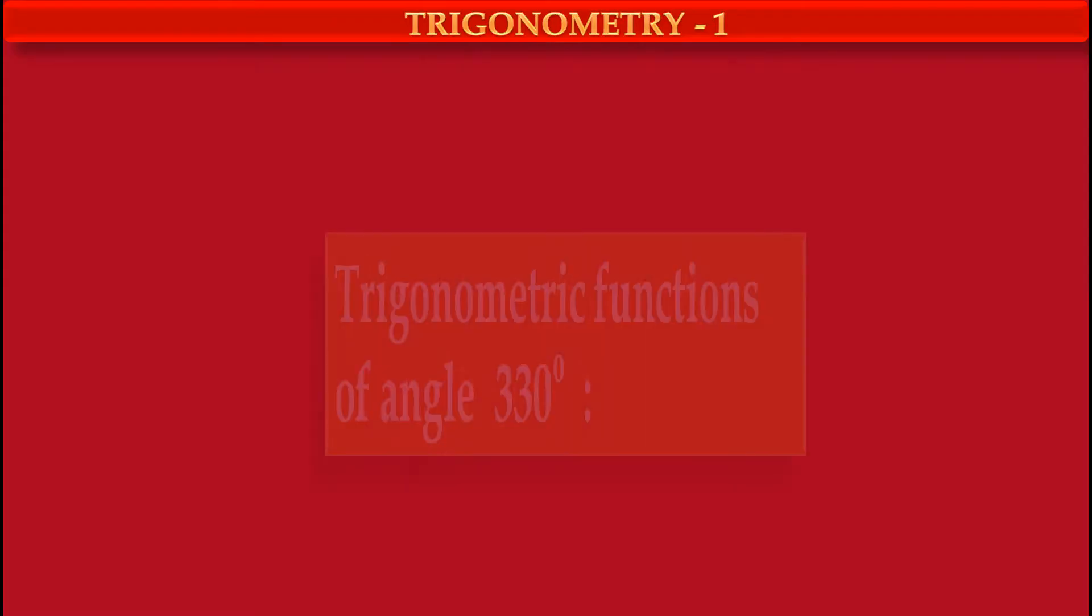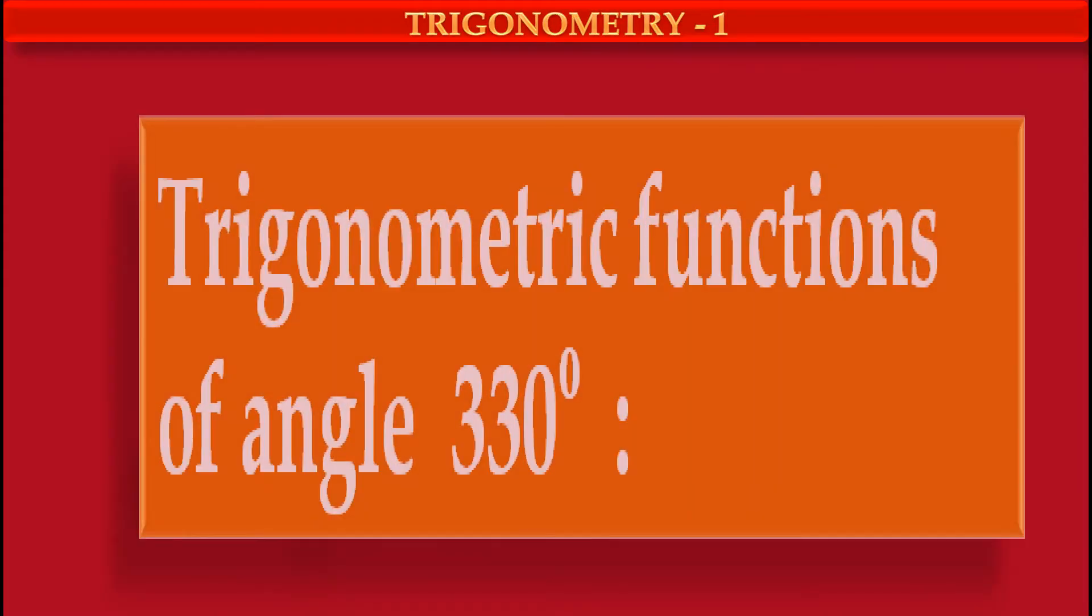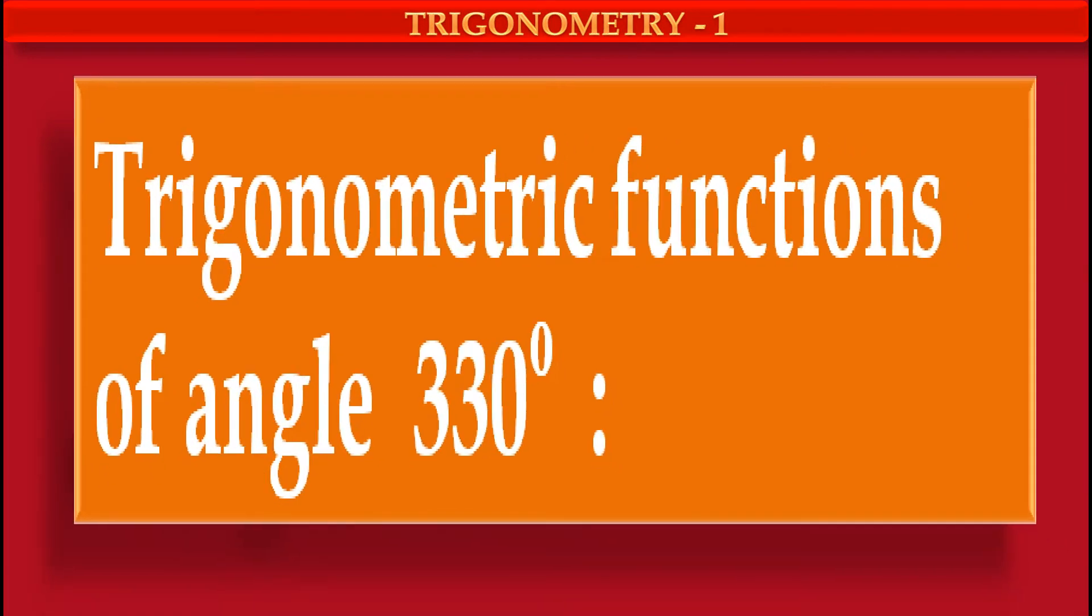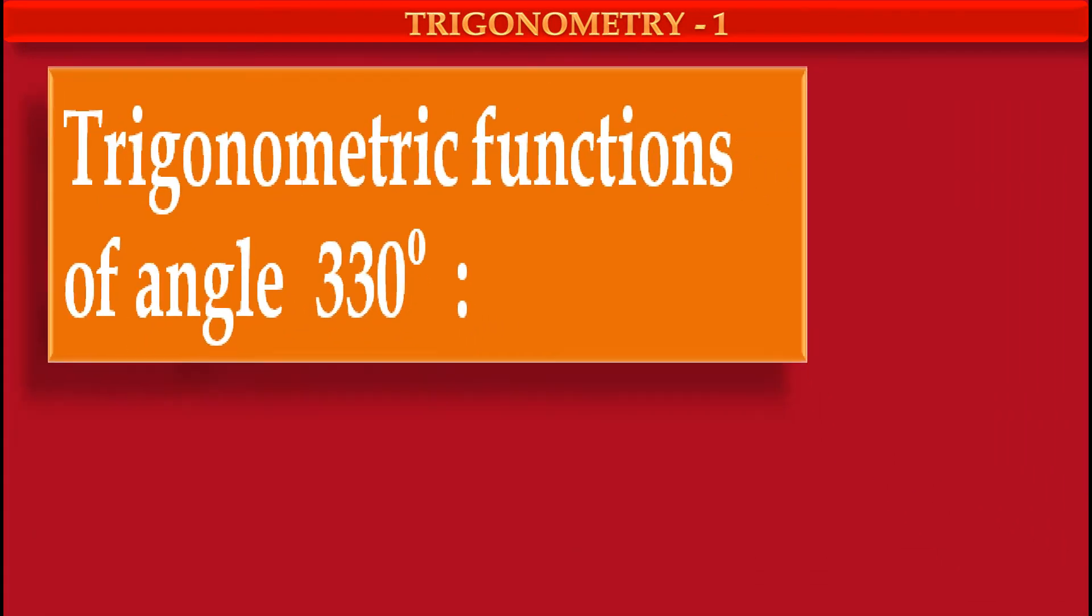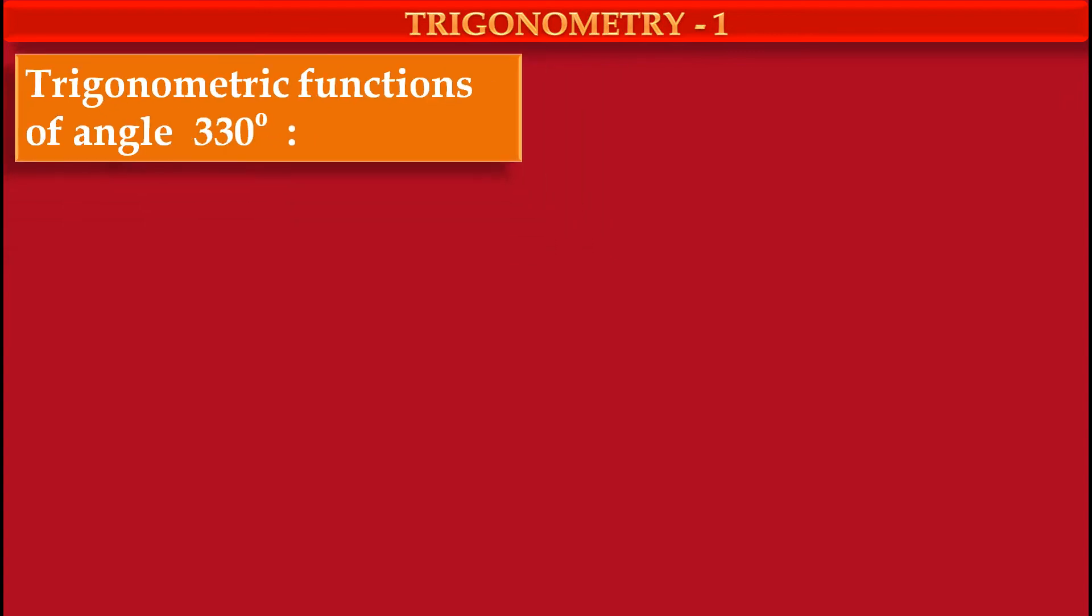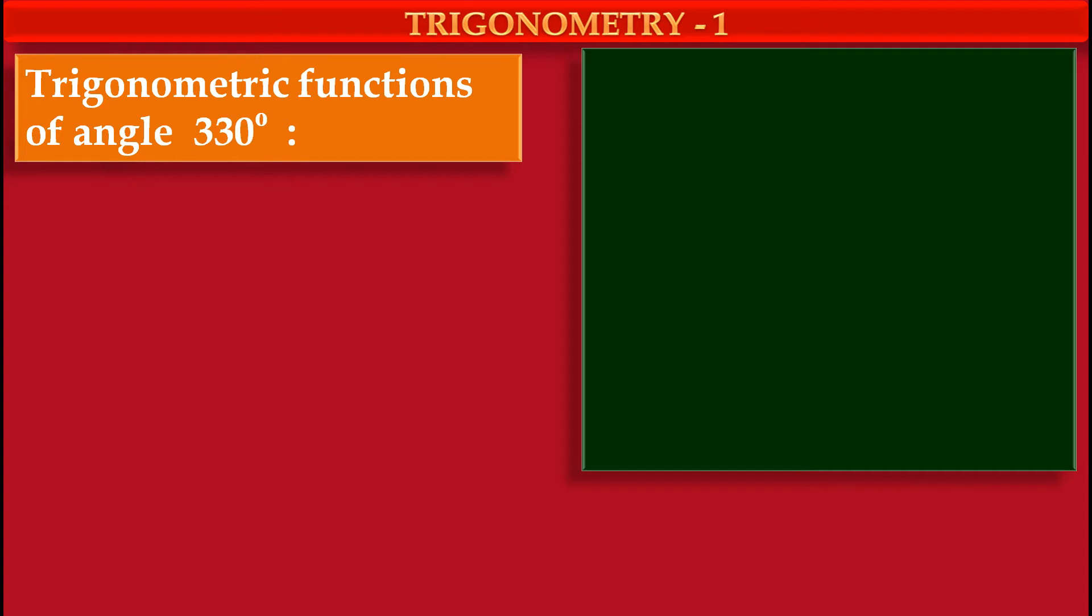So friends, let's see how to find trigonometric functions of angle 330 degrees by using circle. First we have to draw a coordinate system. This horizontal line is x-axis, also known as xx dash. This vertical line is y-axis, yy dash.